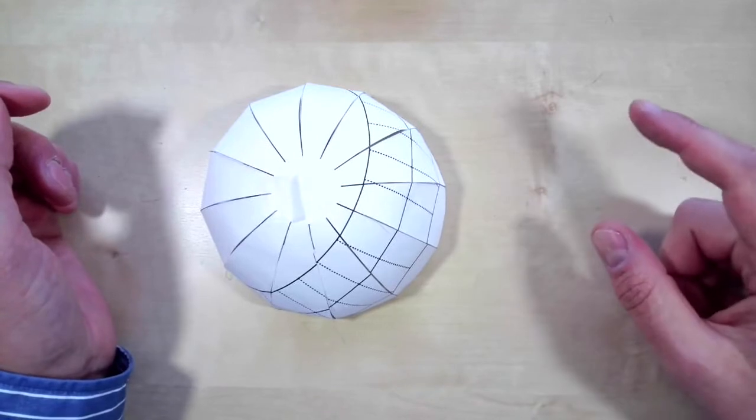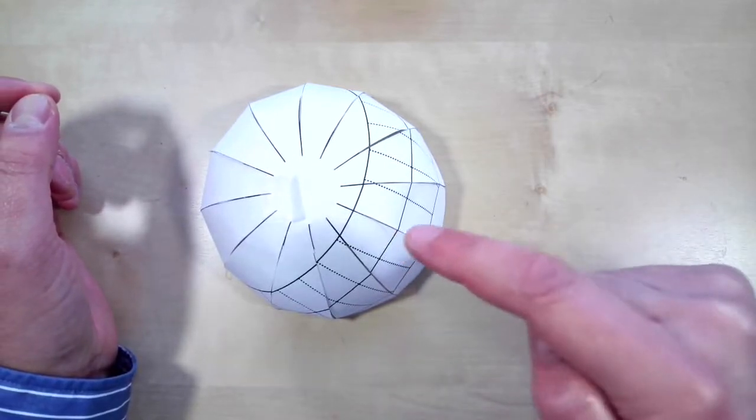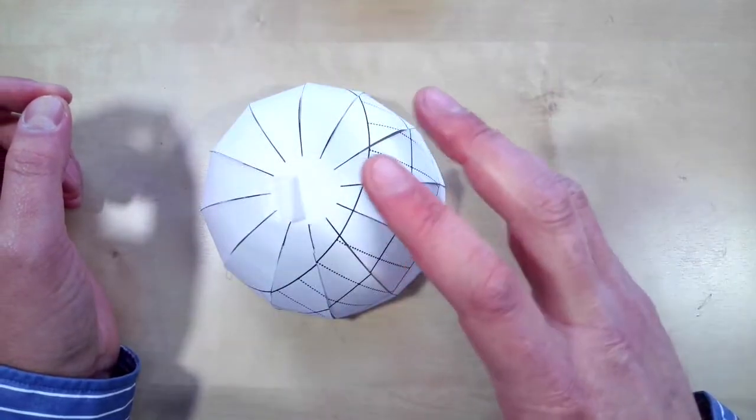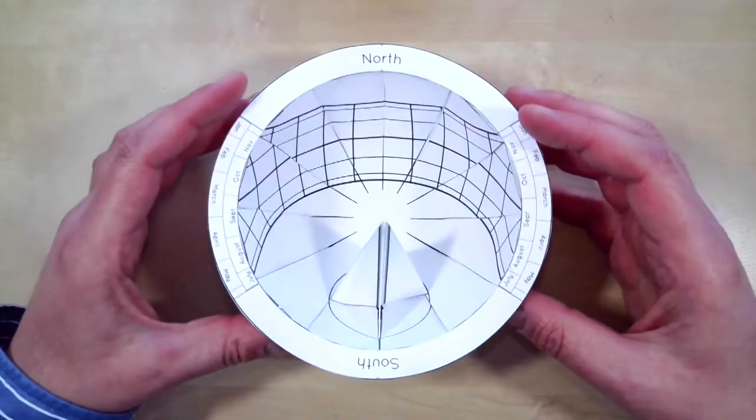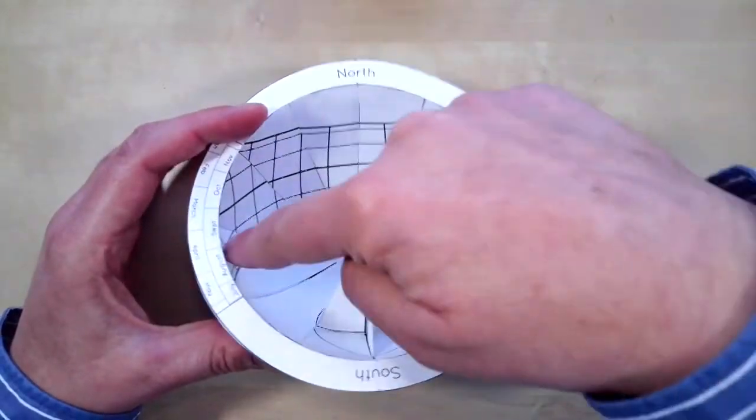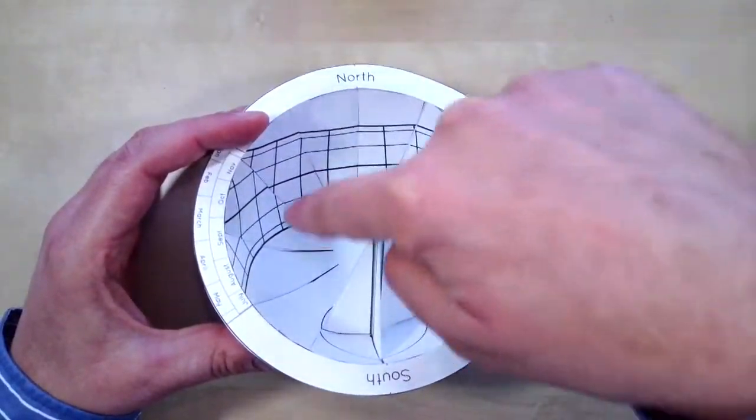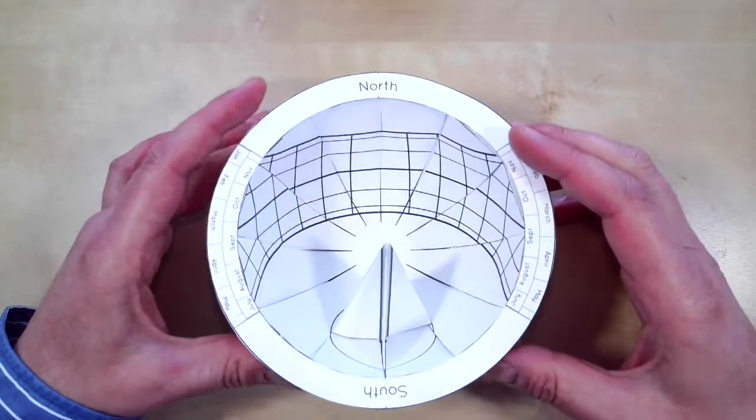Now the really interesting thing is what happens if we take this dome, this little toy model, this pretend sky, and we turn it upside down and we put something in the middle to cast a shadow. So I've got a bowl here with the sun's path marked backwards on the bottom and a little point in the middle to cast a shadow.